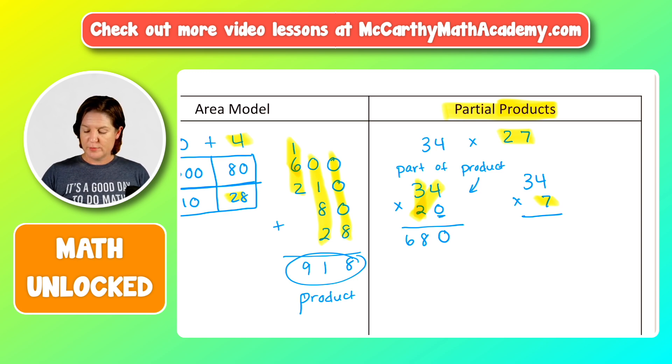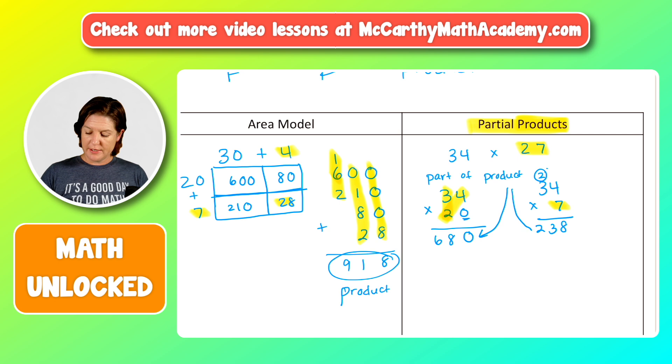And now we're going to find the other part of the product. So here on this one, 34 times seven, we have seven times four. That would be seven, 14, 21, 28. Woo. It's high up here in the clouds. Nice landing dude. Seven times three, seven, 14, 21. Stop there. 21 plus two is 23. There's part of the product. There's part of the product to get the final product. What do we need to do? That's right. We need to join them.